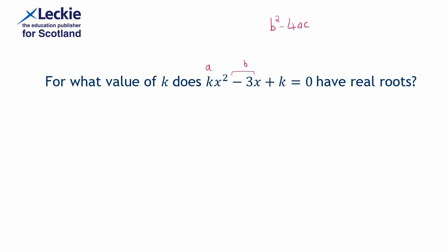Now how are we going to use the discriminant to help us here? Well, we're told to find the value of k for which this equation has real roots. So that means this equation will cross or maybe just touch the x-axis. That's what it means to have real roots. And in that case,